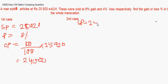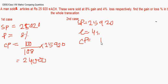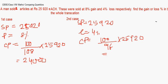For the second case, the selling price was again 25920 but with a loss of 4%. The cost price is 100/96 × 25920, which gives a cost price of 27000.